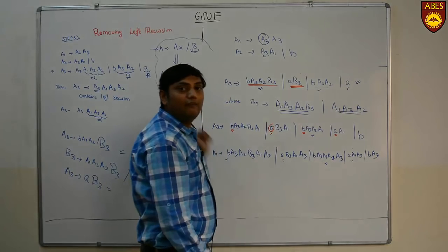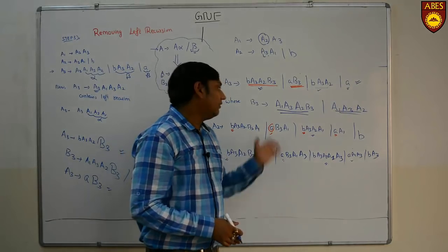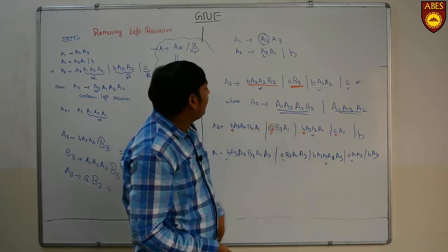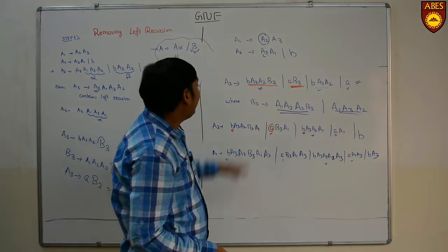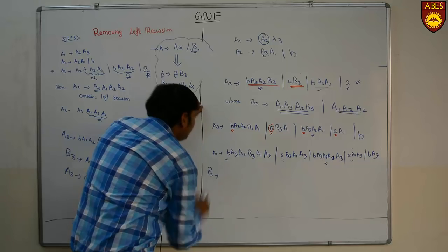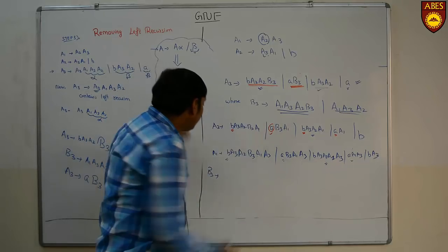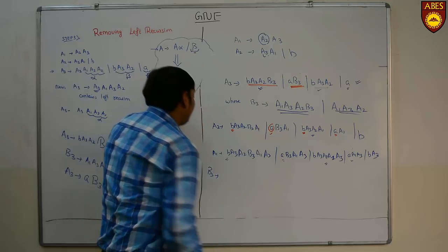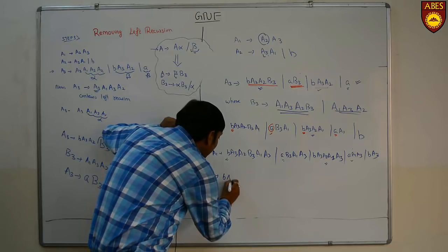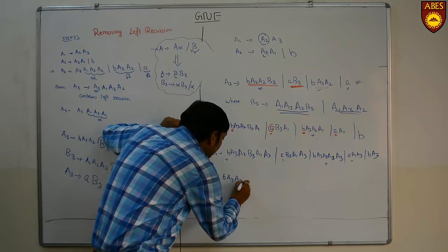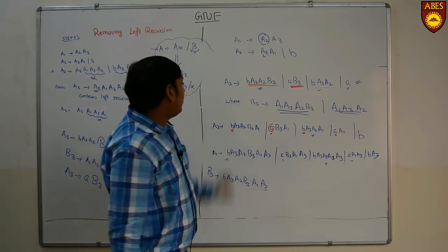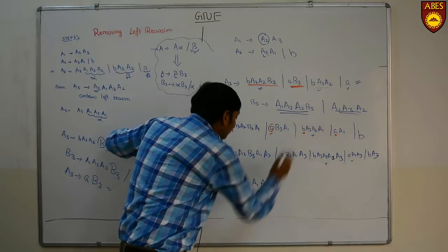This is also starting with variable A1. We want the right-hand side to start with a terminal. So we will substitute the value of A1 in this B3 equation. The first value of A1 is B A3 A2 B3, substituting gives B A3 A2 B3 A3 A2 B3.